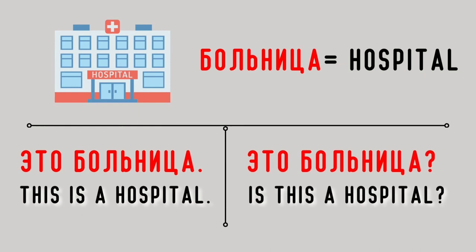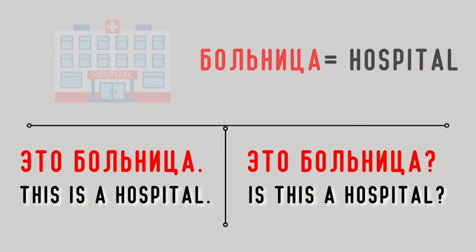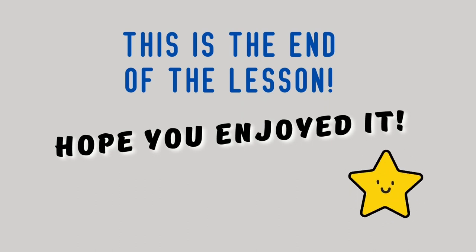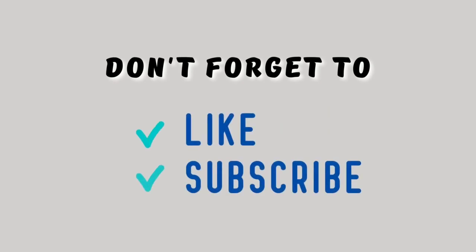Больница — hospital. Это больница. This is a hospital. Это больница? Is this a hospital? Магазин — store. Это магазин. This is a store. Это магазин? Is this a store? So that is the end of the lesson. Hope you enjoyed it. Before you go, don't forget to like and subscribe. Thank you for watching and goodbye!